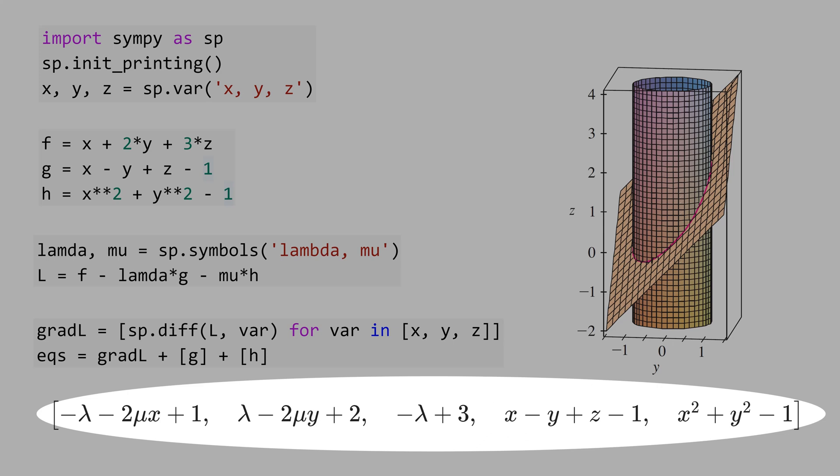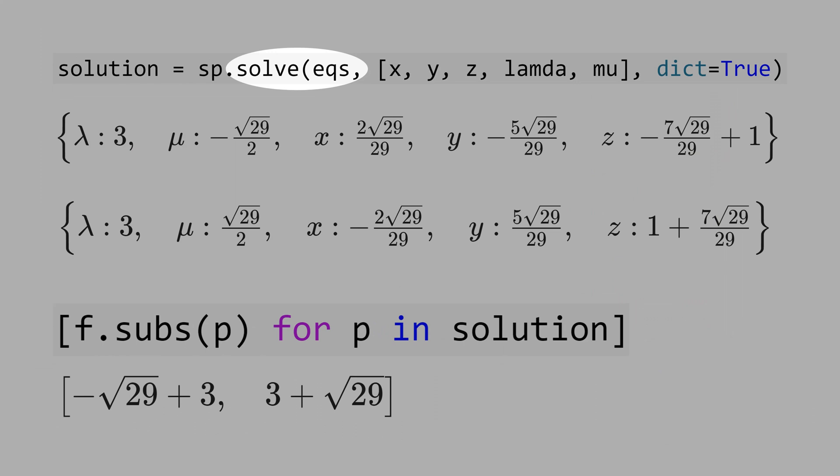We have to solve the system of equations. We have five equations and five variables. Let's solve the system of equations for x, y, z, lambda, and mu.